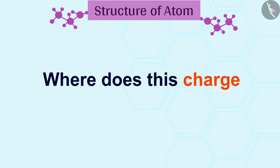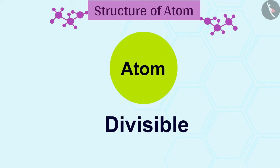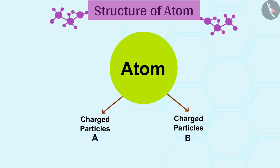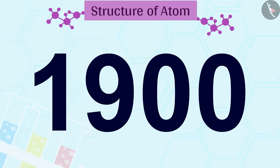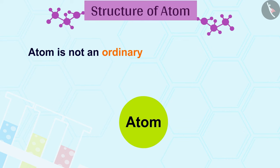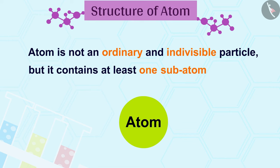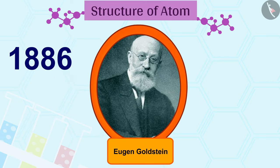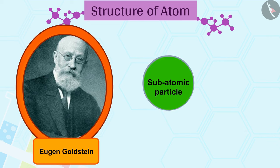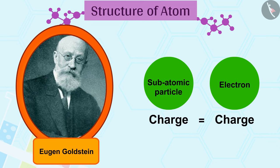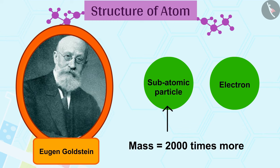Where does this charge come from? This question can be answered by knowing that an atom is a divisible particle and consists of charged particles. By the 19th century, scientists had discovered that an atom is not an ordinary and indivisible particle but it contains at least one subatomic particle, the electron. In 1886, E. Goldstein discovered another subatomic particle whose charge was equal to but opposite to the charge of the electron and the mass was approximately two thousand times more than the electron. These particles were named protons.